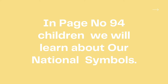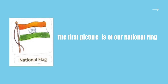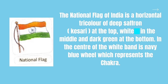In page number 94, children, we will learn about our national symbols. The first picture is of our national flag. The national flag of India is a horizontal tricolor of deep saffron, that is kesari, at the top, white in the middle, and dark green at the bottom. In the center of the white band is a navy blue wheel, which represents the chakra.